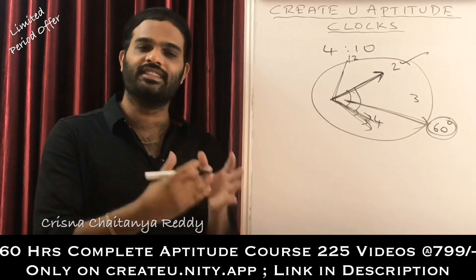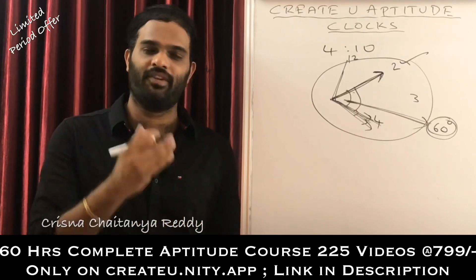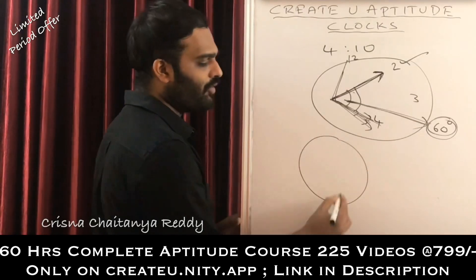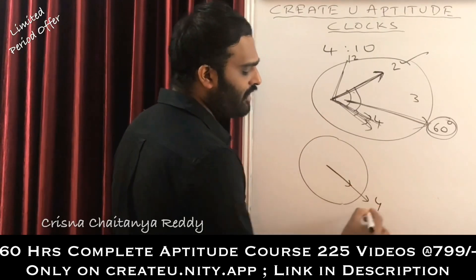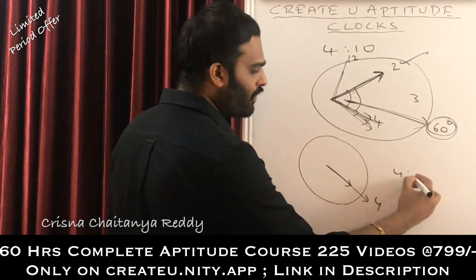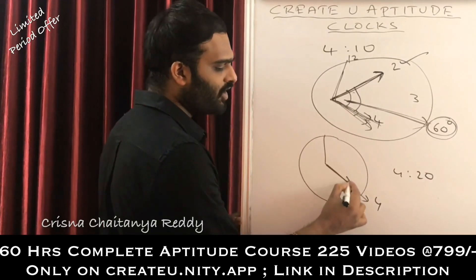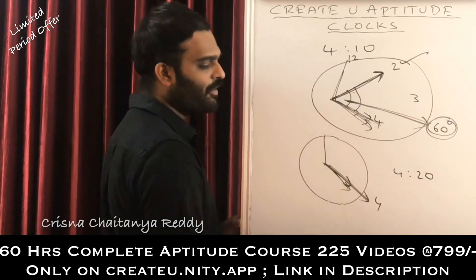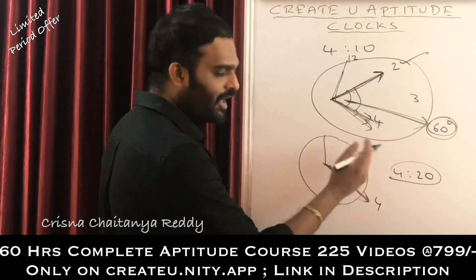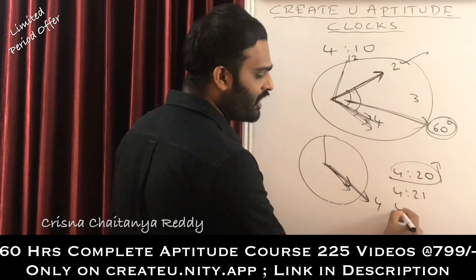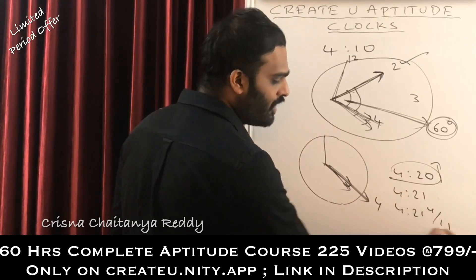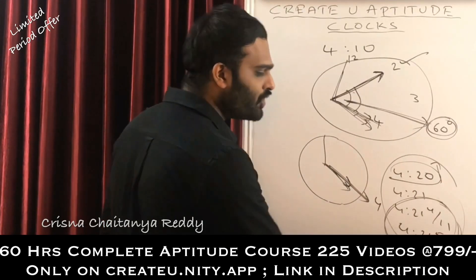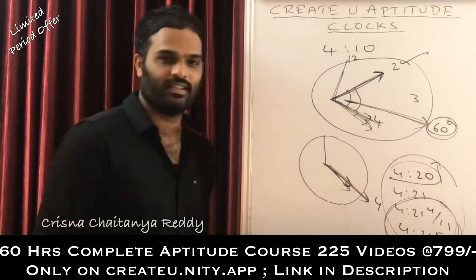The same issue applies to the question: between 4 o'clock and 5 o'clock, when do two hands of the clock meet? At 4 o'clock the hour hand is on 4. By 4:20, the minute hand has reached 4, but the hour hand has already moved a little past 4 towards 5 — so they haven't met yet. They meet a little after 4:20. The options will be close to each other, like 4:21 and 5/11, making it difficult to guess correctly.